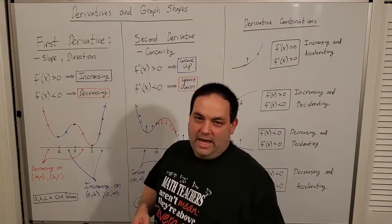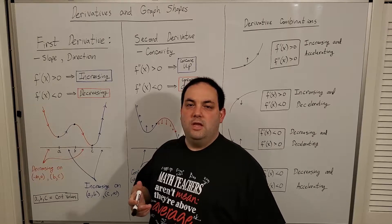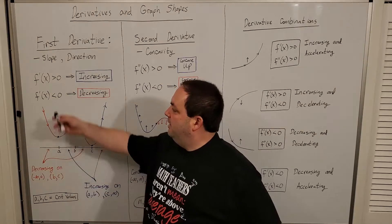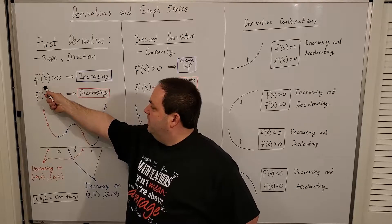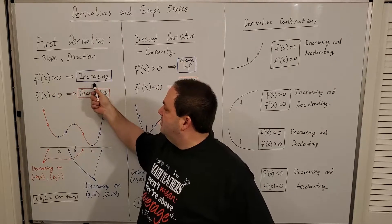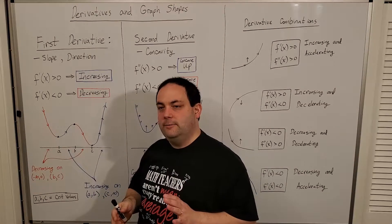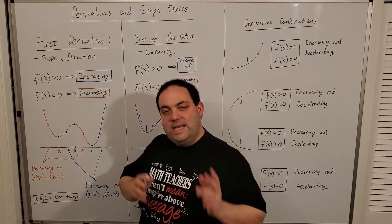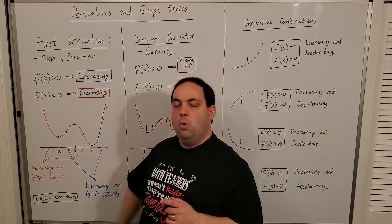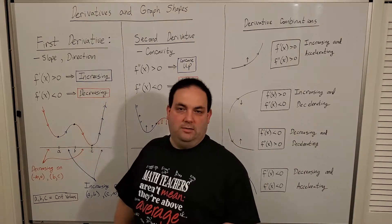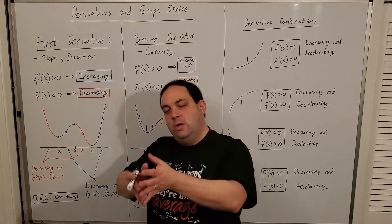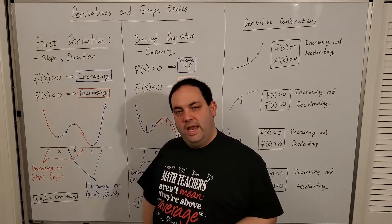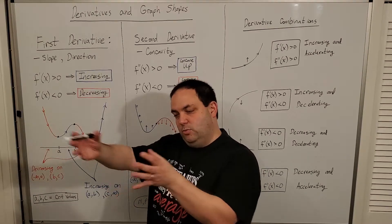At the end of last lecture, one of the consequences of the mean value theorem was that we proved that on any interval where your first derivative is greater than zero, that has to be an interval where your graph is increasing. And any interval on the x-axis where your first derivative is negative, that has to be an interval where your function is decreasing. We're not talking about singular values here — we're talking about big chunks of a graph, whole interval sections.